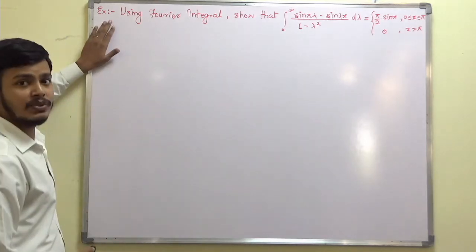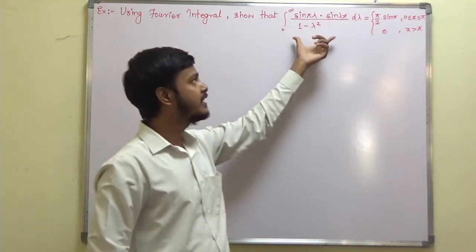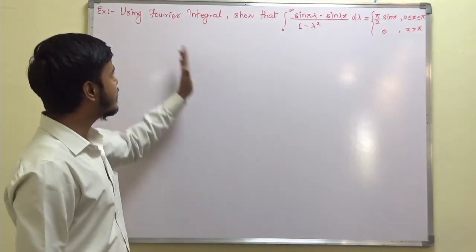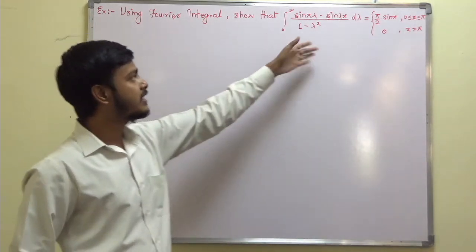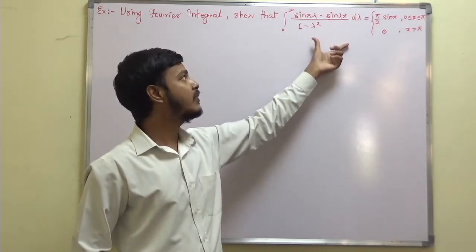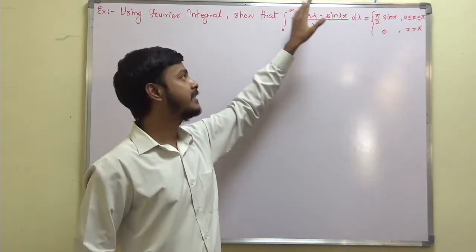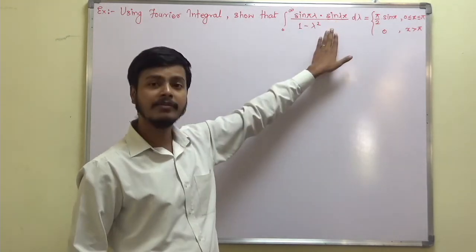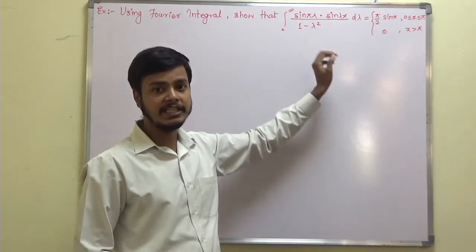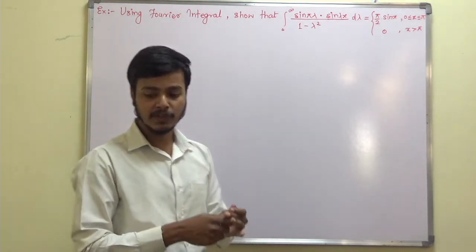This problem says: using Fourier integral, show that this is equal to this. As you can see in this result that we wanted to show, there is an involvement of sine, meaning thereby this problem can be solved with the help of Fourier sine integral.